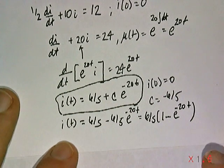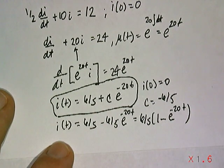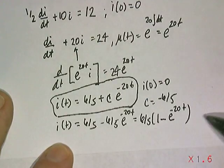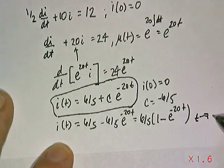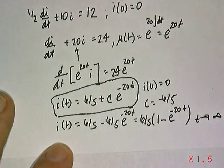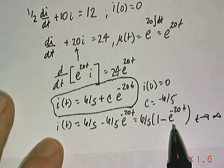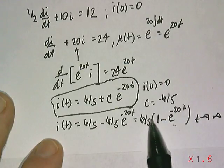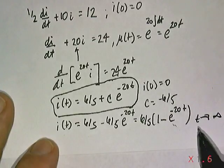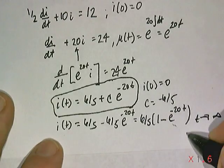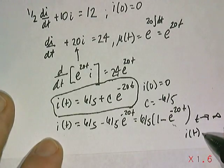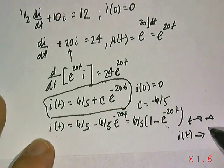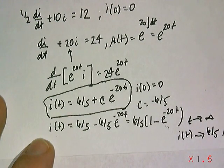The reason why that's nice to write that way is you can see what's going to happen. As T goes to infinity, as time marches forward in this circuit, you could see that the current is eventually going to converge to what? This term will eventually go to zero, right? That's e to the minus 20T. So ultimately, as T goes to infinity, the current will approach 6/5, and the unit is amperes.